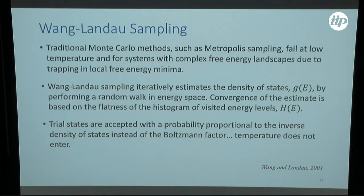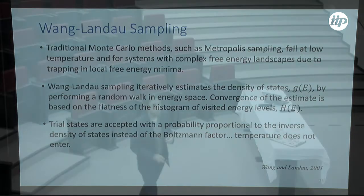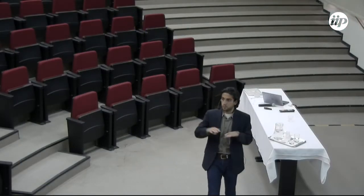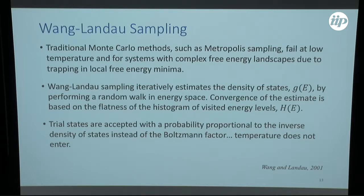To simulate these proteins we use Wang-Landau sampling. The motivation is that traditional methods like Metropolis will fail at low temperatures or in systems with complex free energy landscapes because of the Boltzmann factor — you either have a large energy or a small temperature and the probability of accepting a move goes down. In Wang-Landau sampling we iteratively estimate the density of states by performing a random walk in energy space, generating different configurations and comparing densities of states until we converge to the true density of states via a flat histogram criterion.